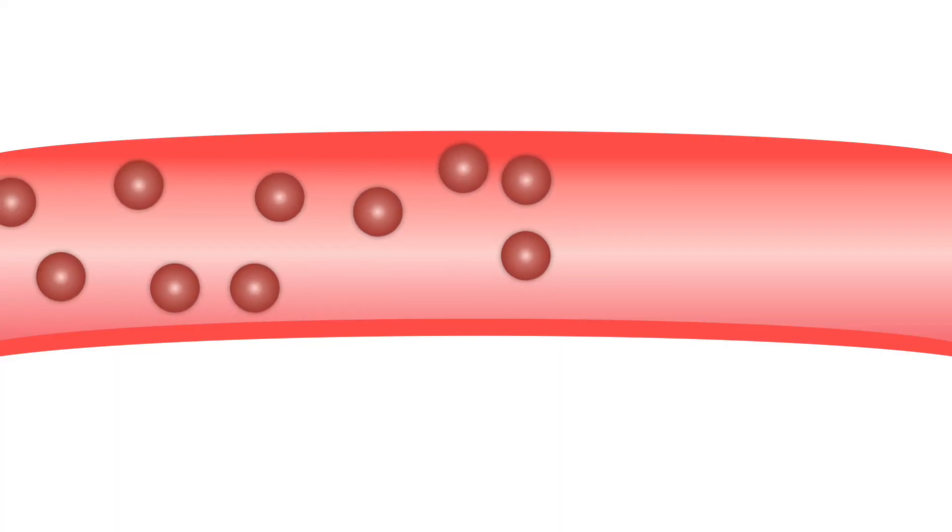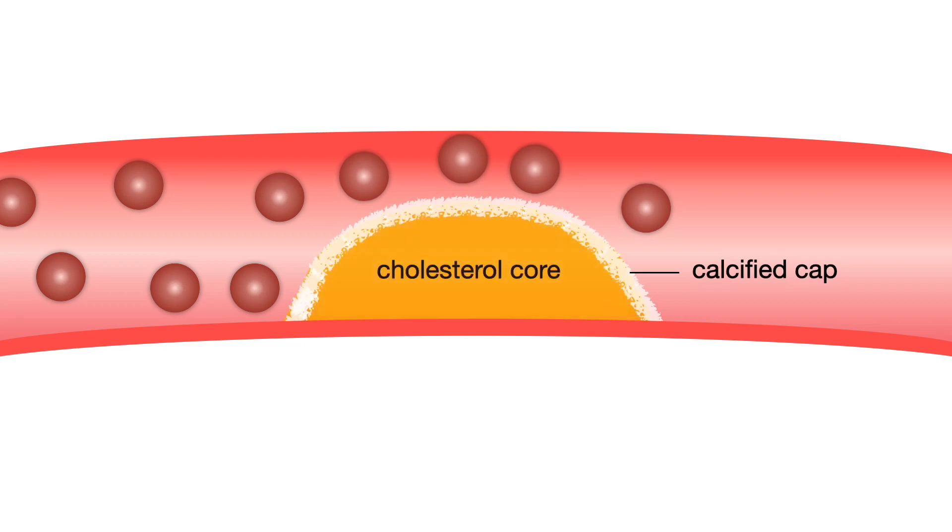The process of coronary artery disease, also known as atherosclerosis, involves a complex interaction between abnormal blood vessel function, elevated levels of cholesterol, immune system cells, and inflammation. Altogether, this process of coronary artery disease results in a coronary artery plaque, or heart artery blockage, which can have a calcified component as well as a cholesterol-rich core.